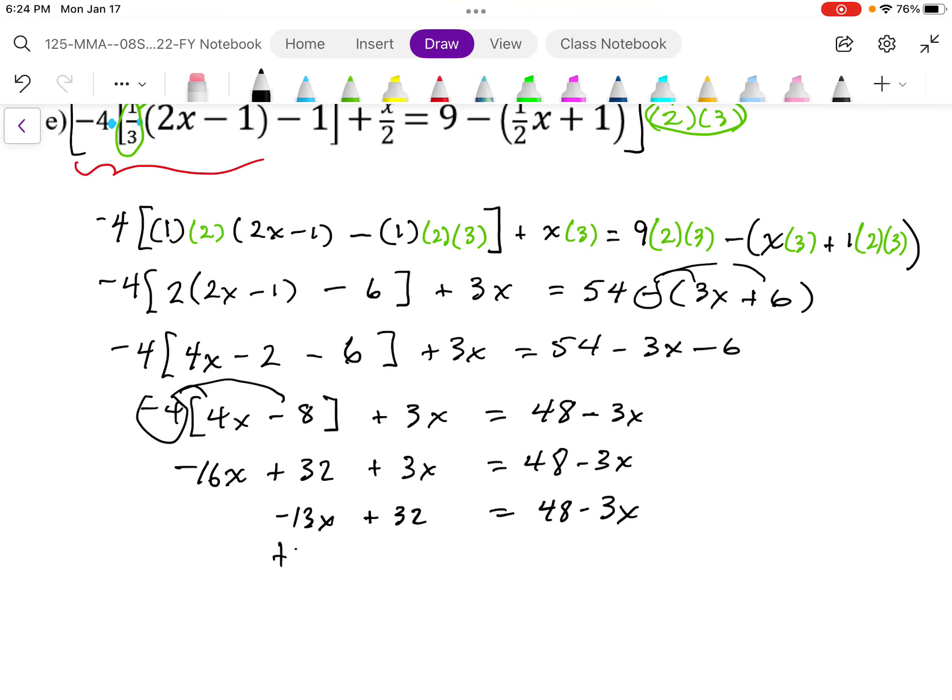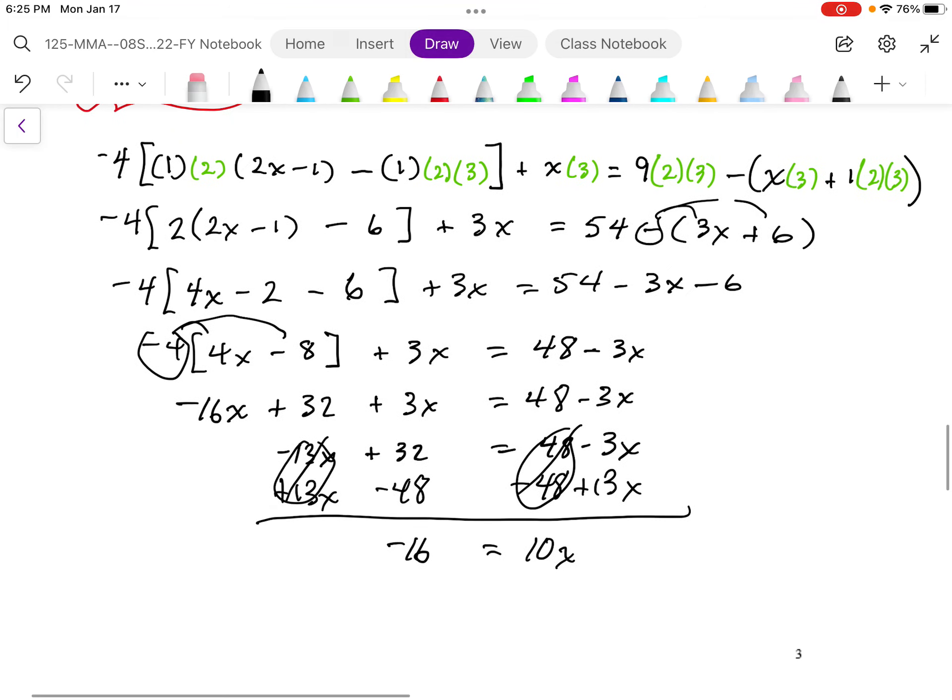So I'm going to add 13x to both sides to get rid of that 13x on the left-hand side. I'm going to subtract 48 from both sides to get rid of the ones on the right-hand side. Make sure I keep track of my terms. 32 minus 48 is negative 16. Negative 3 plus 13x is positive 10x. And then divide by 10, divide by 10, and I get the answer that I had previously. Simplified fraction of 8 over 5.